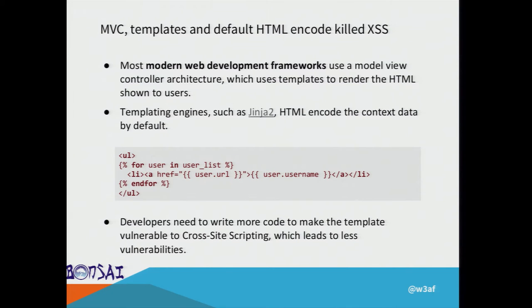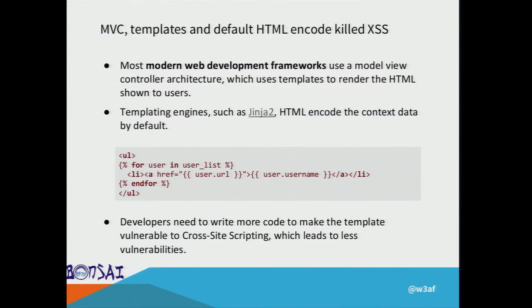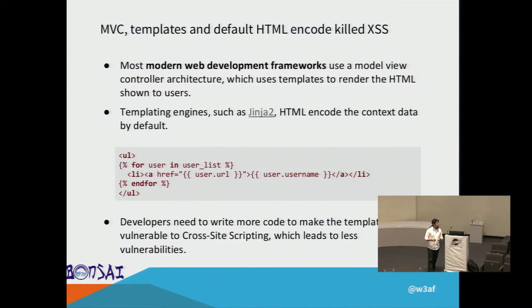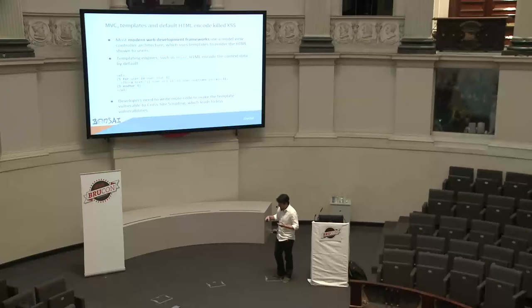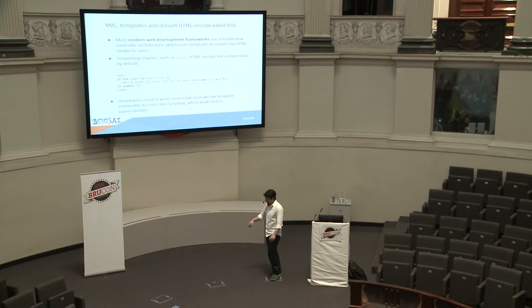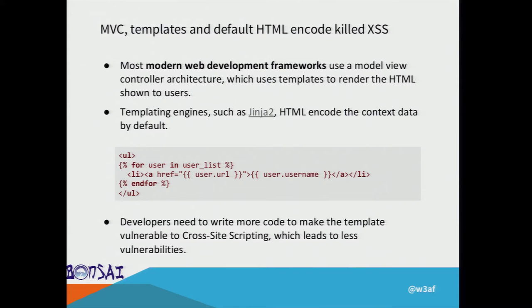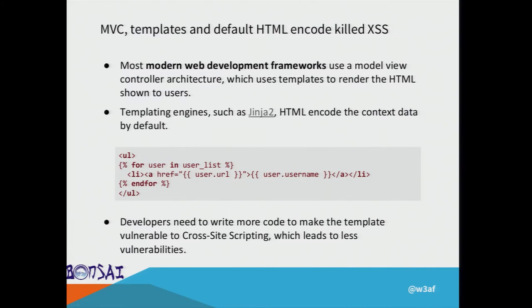Something similar is going on with cross-site scripting. If you use modern web application development frameworks, most likely that framework uses a templating engine. The templating engine is going to help the developer avoid cross-site scripting, because when you do something like user.URL using curly braces to print a variable, it's going to HTML-encode your variable by default. So if you write that, there is no cross-site scripting — you'd need to add extra code like a pipe raw or dot HTML safe to introduce it.